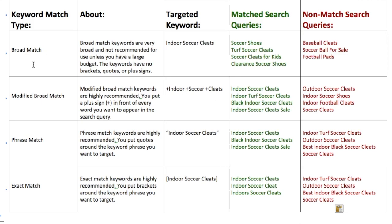Broad match is really broad and a little bit irrelevant sometimes — we personally don't recommend using it at all. If you just type in your keywords with no modifiers like plus signs, quotes, or brackets — for example, indoor soccer cleats — Google will match it with all sorts of different search queries: soccer shoes, turf soccer cleats, soccer cleats for kids, clearance soccer shoes. It's not a best practice because you can't send people to the best landing page for every keyword. Non-matches would be baseball cleats, soccer balls, football pads. A good alternative is modified broad match.